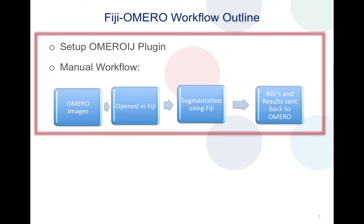Fiji is nothing but ImageJ and is an open source image processing software. The first step that we'll cover is the setup of the OMERO ImageJ plugin under the Fiji folders, and the second part would involve using the OMERO ImageJ plugin to open OMERO images within Fiji to do some kind of analysis — in this case segmentation — and then eventually sending the results back to OMERO.